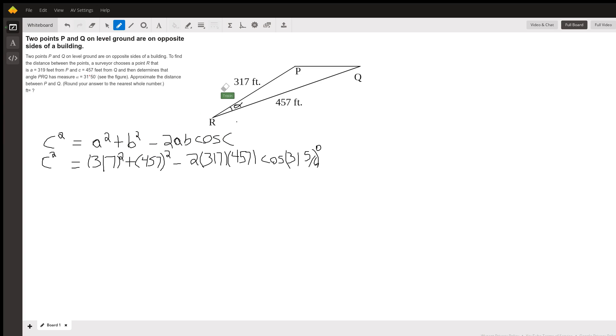So in this case, it doesn't really matter what order we label a and b. I just did 317 foot side was a and the 457 foot side was b. It doesn't really matter in the grand scheme of things, so that's what I chose.